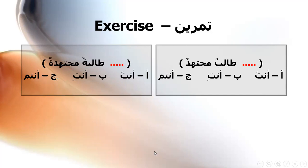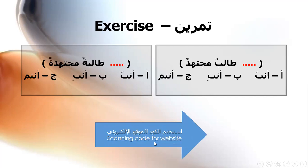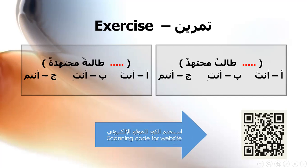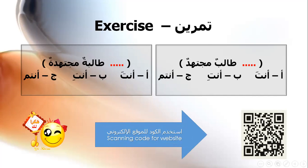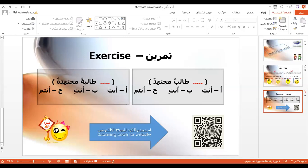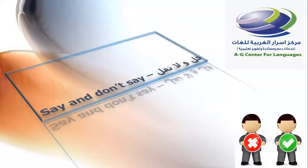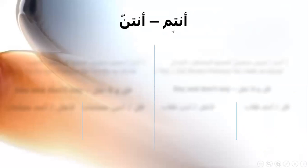For more information, you can use this code to learn Arabic for free on our website, from beginner to advanced. Now let's move to the second part, which talks about the plural pronouns: أنتم and أنتن. أنتم is the plural of أنت, and أنتن is the plural of أنتِ.